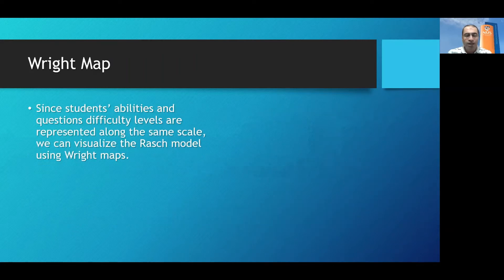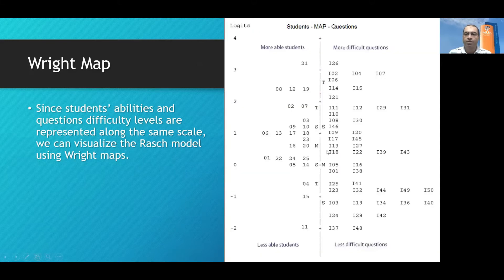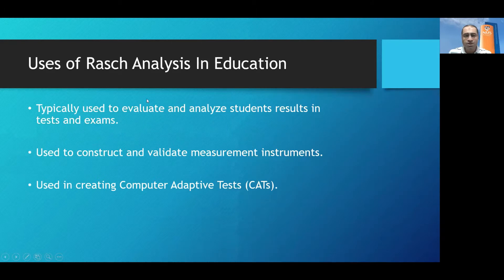This is a very important point — by presenting the students' abilities and the questions' difficulty levels on the same scale, this makes it easier for us to visualize such models using Wright maps that look like the map we can see here. In a Wright map like this one, we have the list of students and the list of questions, and these lists are ordered — for students, based on their ability: more able students are found near the top, less able students near the bottom. Also, more difficult questions are found near the top and less difficult questions near the bottom. This is the idea behind Rasch analysis, Rasch models, and Wright maps.